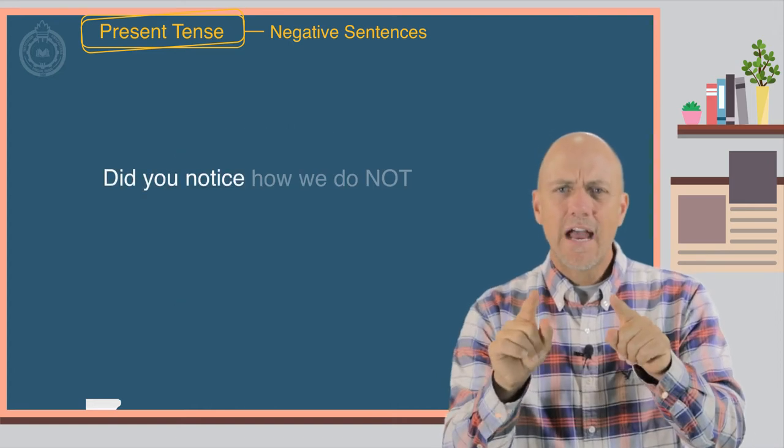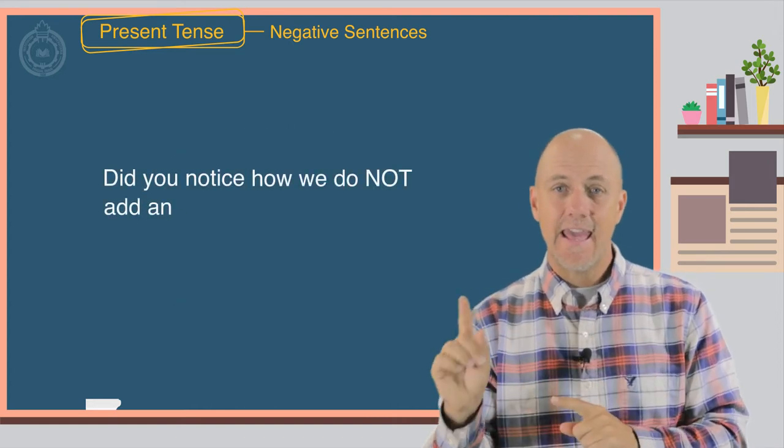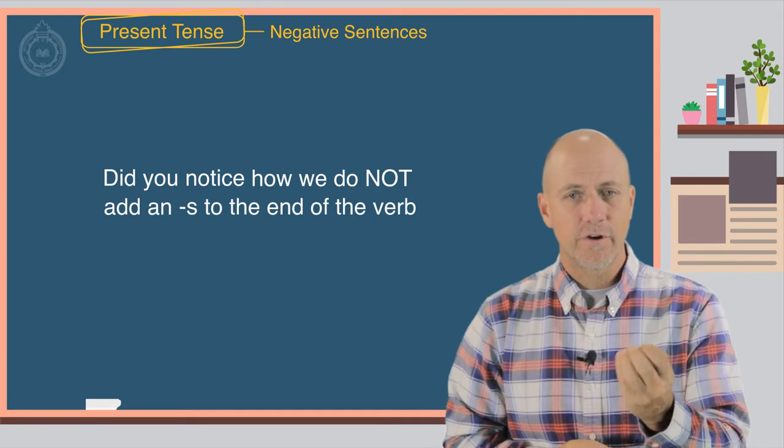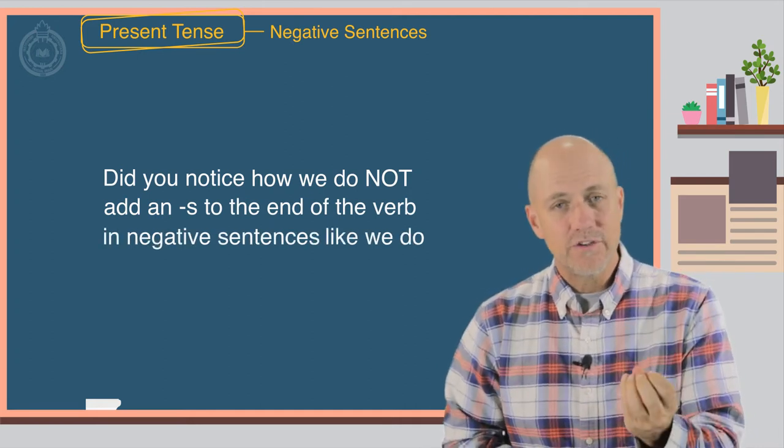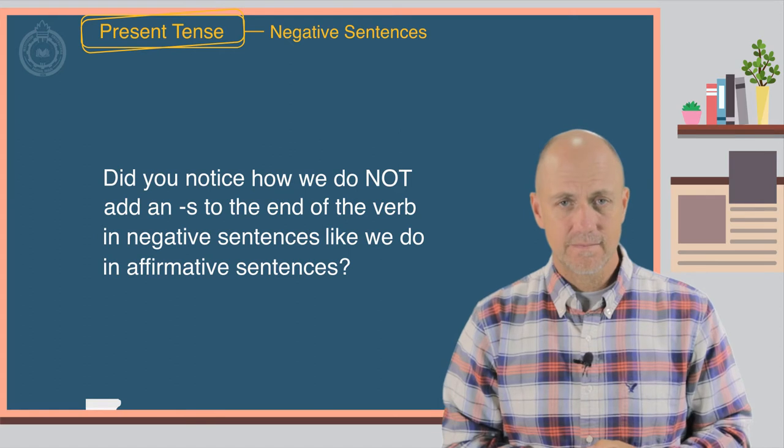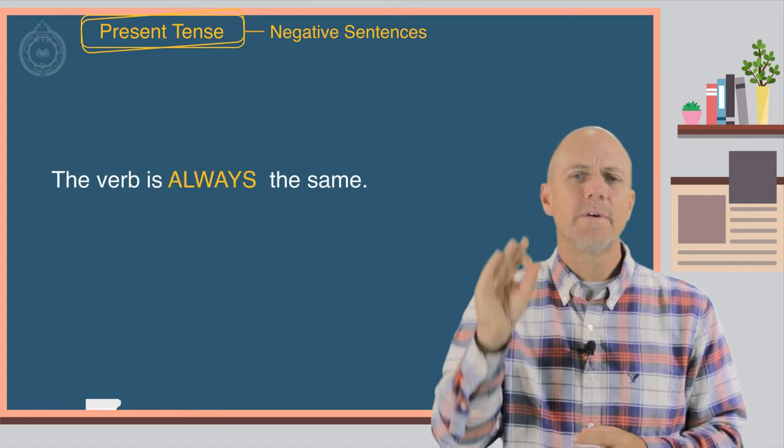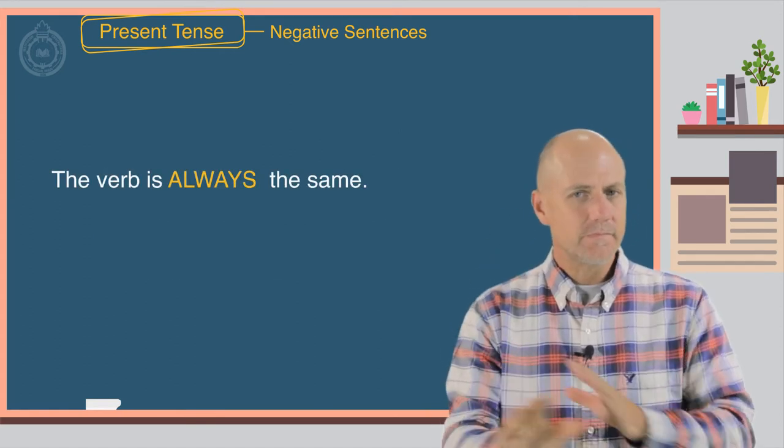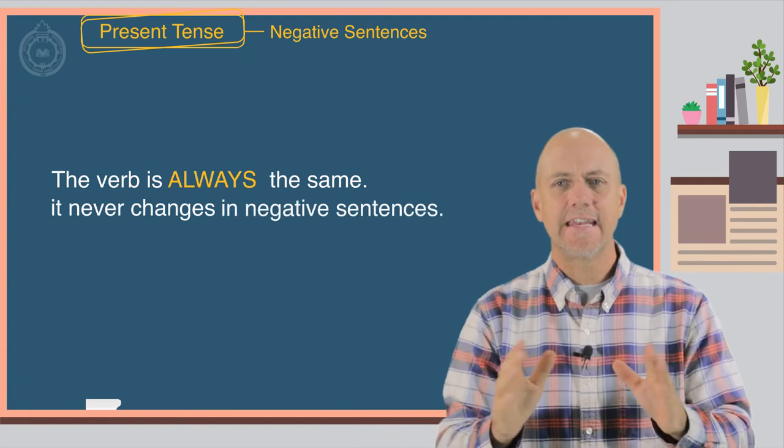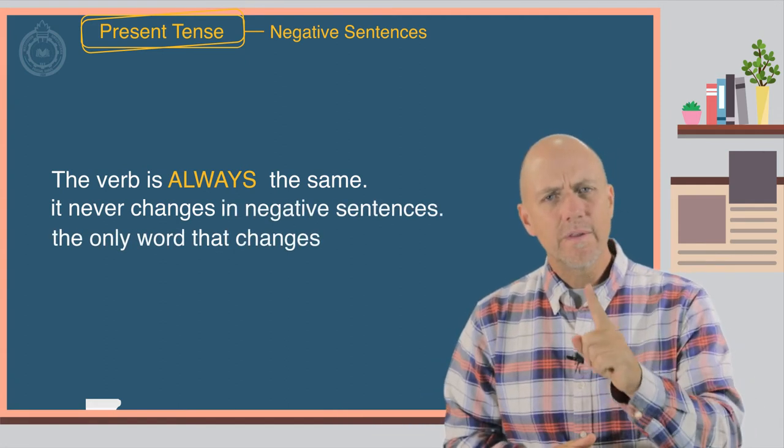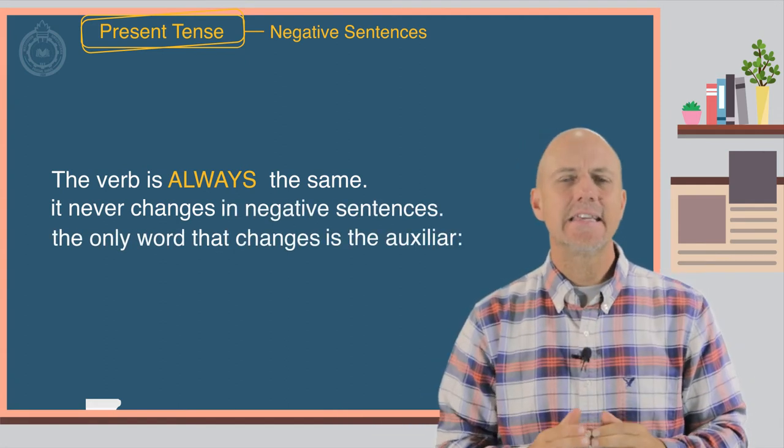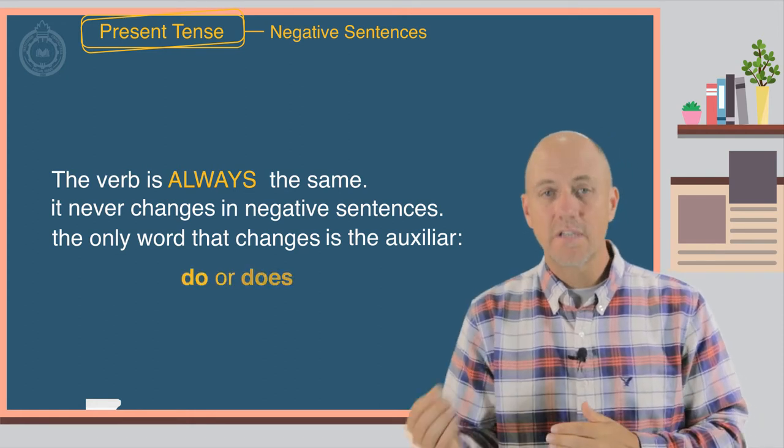Did you notice how we do not add an S to the end of the verb in negative sentences like we do in affirmative sentences? The verb is always the same. It never changes in negative sentences. The only word that changes is the auxiliary word, do or does.